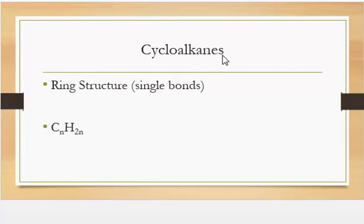Cycloalkanes are alkanes, so they are hydrocarbons with single bonds, that are in a ring structure.